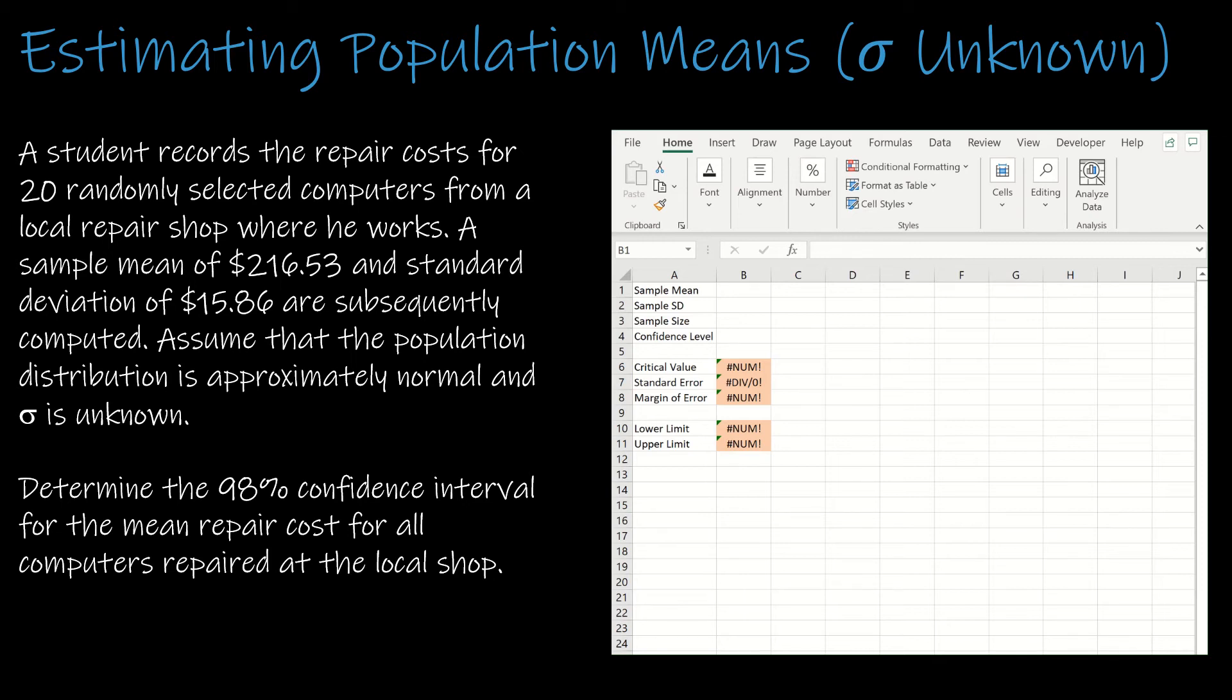Before I start plugging things into Excel, I need to take a look at whether or not I can use this model. I need to check: is the population standard deviation unknown? And it is, because that's told to us in the question. And the population is approximately normal, which is good because the sample size is less than 30. So it either has to be greater than 30 or the population distribution has to be approximately normal. So we seem to be okay there as well. And then 20 randomly selected computers - this is a random sample, so yes, we can proceed.